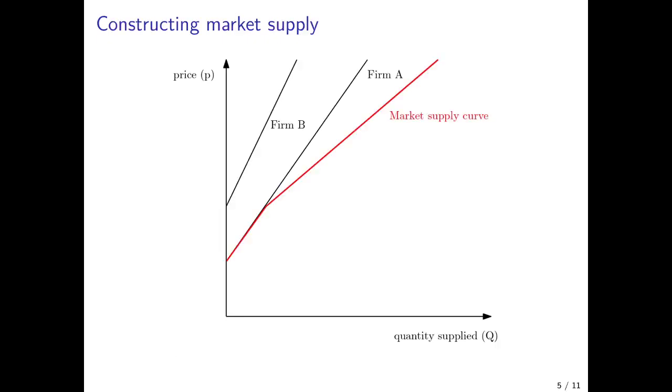Now if we add these two horizontally, we would get the market supply curve. Up to this point here, only firm A supplies. And if the price exceeds this point, firm B would also supply and we would get this supply curve here.